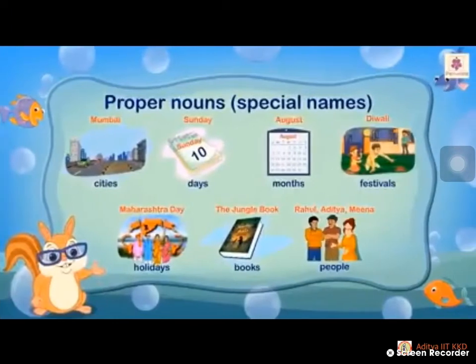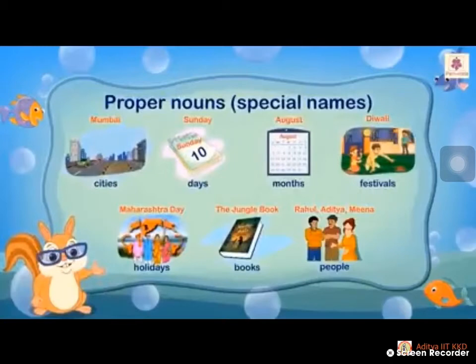See proper nouns — special names: name of a city, Mumbai; which day, Sunday; which month, August; festival, Diwali; name of a festival; book, The Jungle Book; people — Rahul, Aditya, Meena. Like that, we have specified each and every name very clearly and particularly. So these all names come under proper nouns.